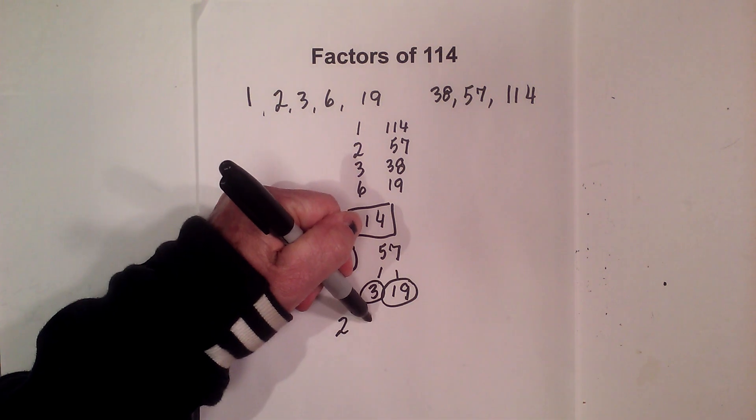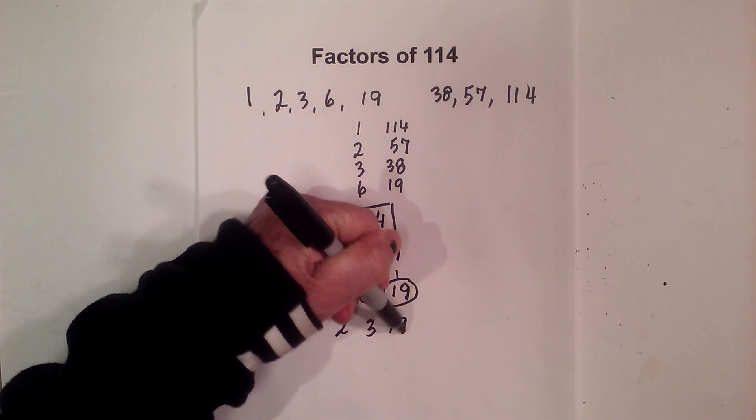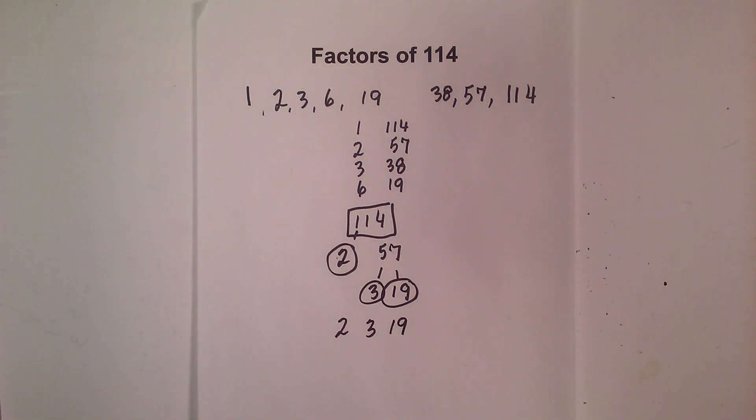So the prime factors of 114 are 2, 3, and 19. I hope that helps. Thanks for watching. MooMoo Math uploads a new math and science video every day. Please subscribe and share.